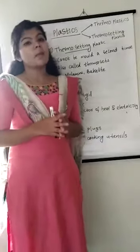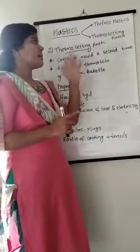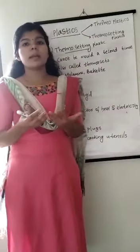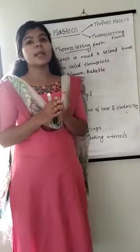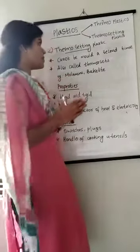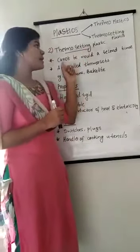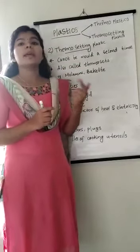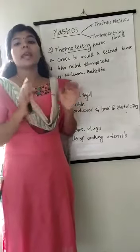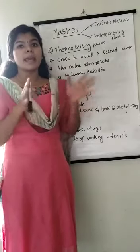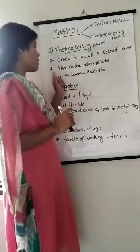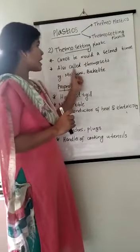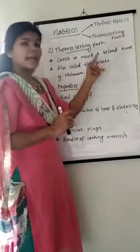The second type is thermosetting plastics. These are plastics which, once molded, cannot be softened by heating. Thermosetting plastics cannot be molded a second time. So once we give them a desired shape, we cannot change the shape by heating. Some examples are melamine and bakelite.